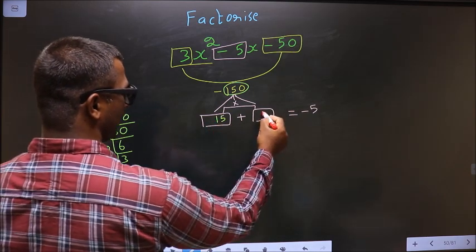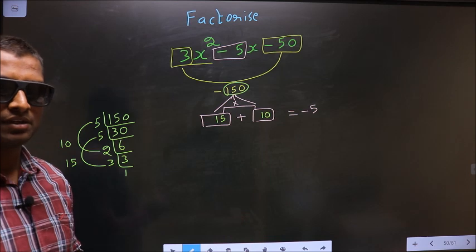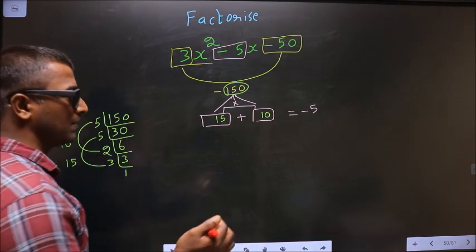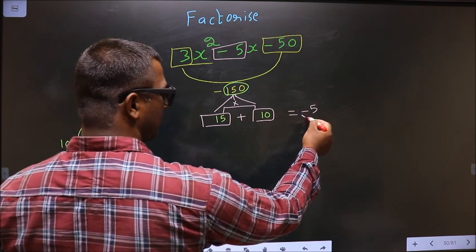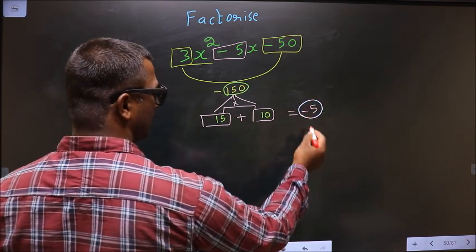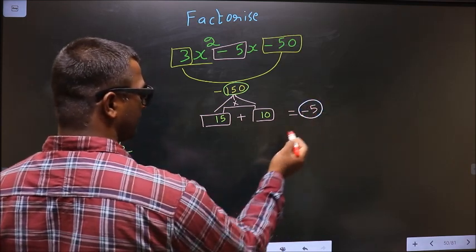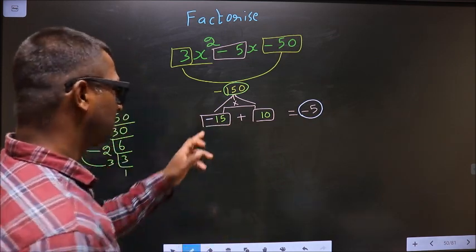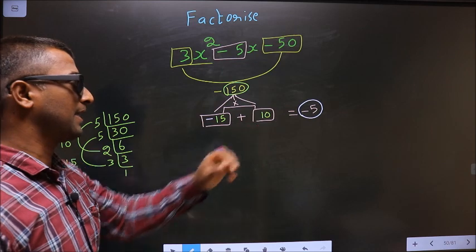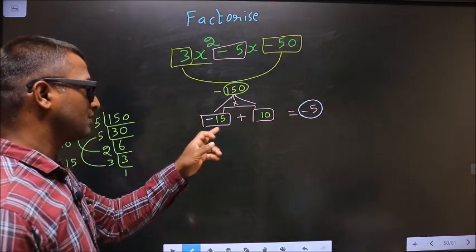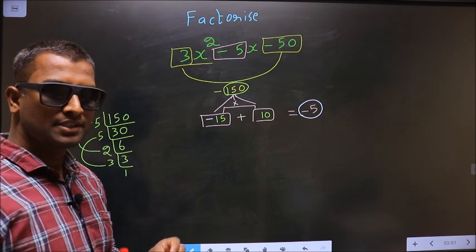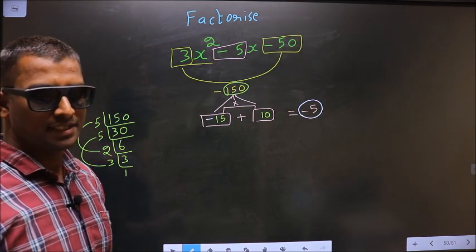So 15 and 10. Now adjust the signs. To get -5, put negative before 15: -15 + 10 = -5, and -15 × 10 = -150. Signs are now adjusted.